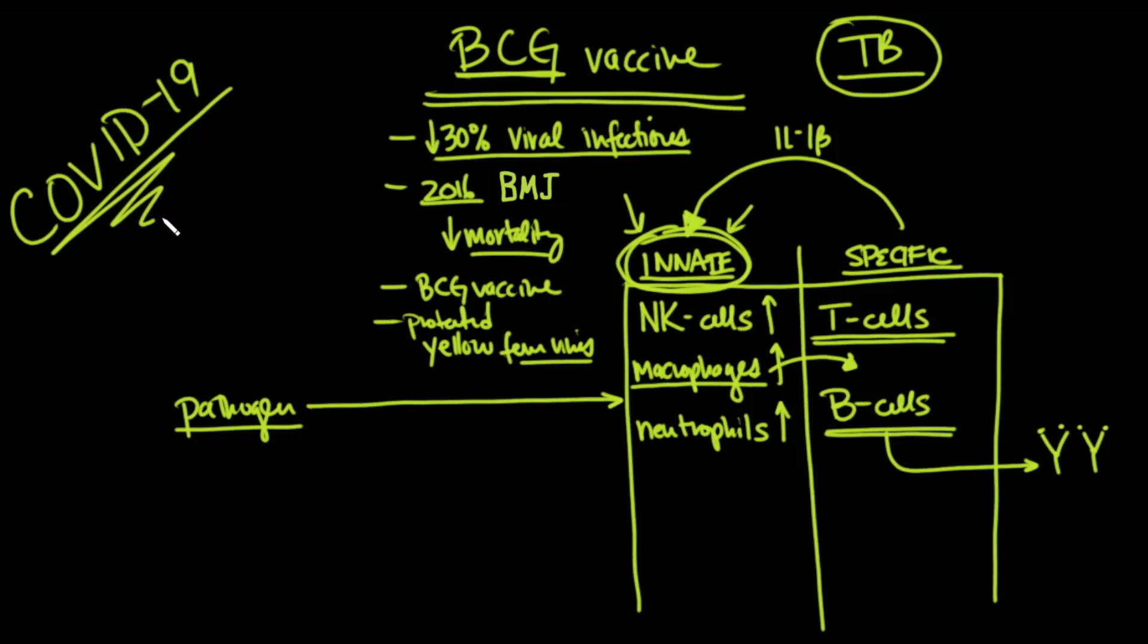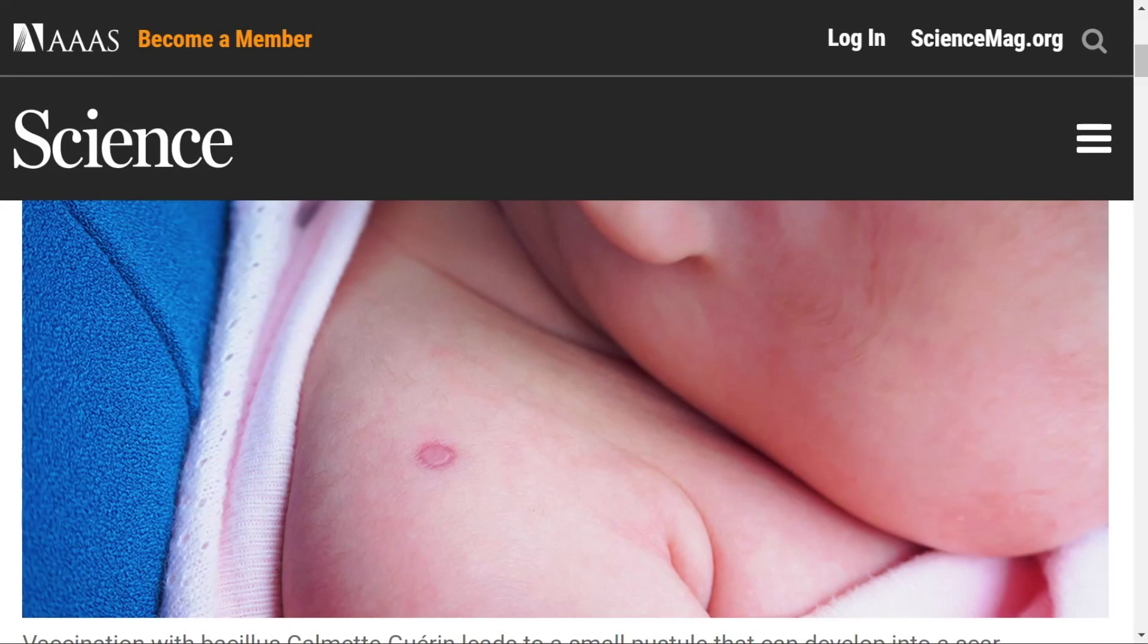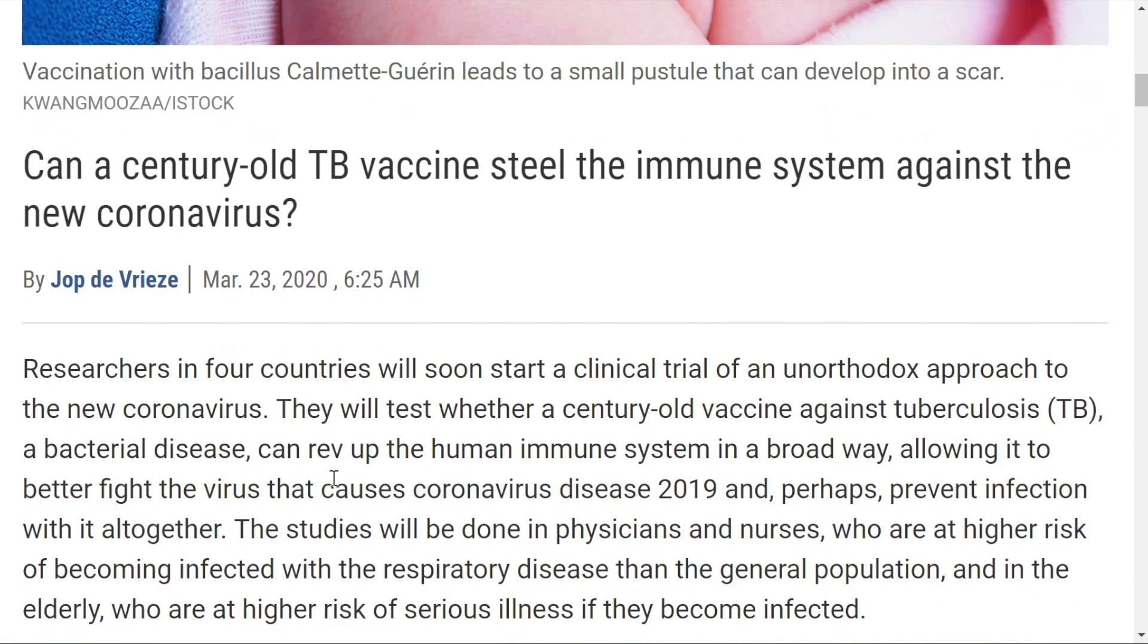And so there's a number of studies all across the world including Greece, in the Netherlands, in Australia, and in the UK that's looking at giving the BCG vaccine to elderly population and high-risk people like physicians, nurses, health care workers, etc. And if they can give them the BCG vaccine, they're hoping that the innate immunity will go up enough that they might not get the infection. I'll put a link in the description below to the article describing this technique. Can a century-old TB vaccine steal the immune system against the new coronavirus?